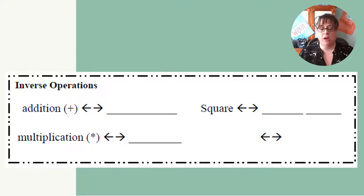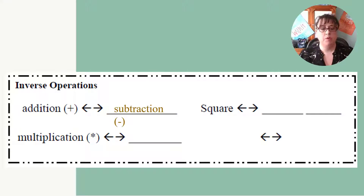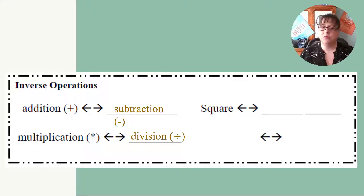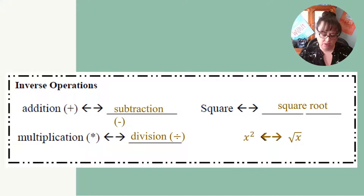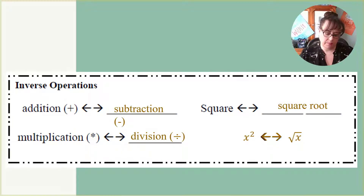When we look at inverse operations, the inverse of addition is subtraction, and the inverse of multiplication is division. Square roots allow us to take the inverse operation of squaring. So the inverse operation of a square — something like x squared — is a square root.